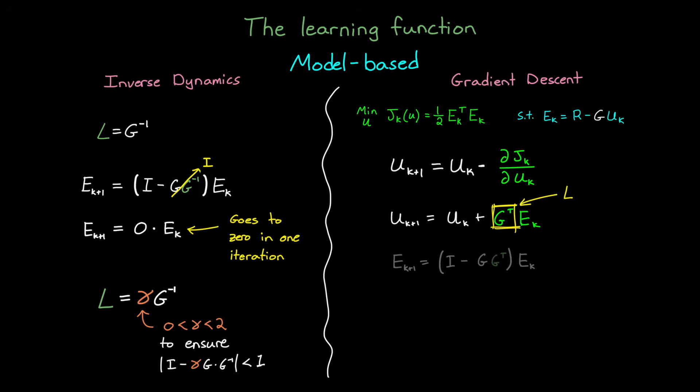And if we plug that into the error dynamics equation, we get that the magnitude of i minus g g transpose needs to be less than one. However, once again, we can adjust the learning rate by adding in a scalar term gamma. And so gamma must be between 0 and 2 over the magnitude of g squared, to once again guarantee that learning will converge.